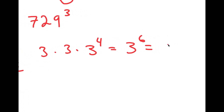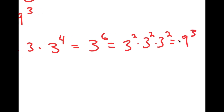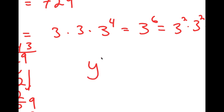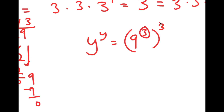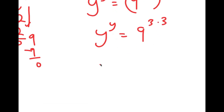And 3 to the power of 6 can be broken down into 3 squared times 3 squared times 3 squared, which equals 9 to the power of 3. So I replace 729 to the power of 3 with 9 to the power of 3 to the power of 3. And 9 to the power of 3 to the power of 3 is the same thing as 9 to the power of 3 times 3, and 3 times 3 is 9. So I get y to the power of y is equal to 9 to the power of 9.